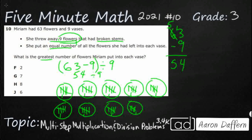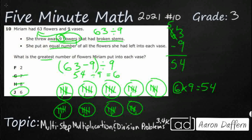So it looks like the answer is going to equal 6. If we know our multiplication facts, 6 times 9 is 54. So our answer is 6, which is answer choice J. Now, where did some of the other answer choices come from? Well, if you didn't take those 9 away and just did 63 divided by 9 — skipping that first step — you would have gotten 7. That's why answer choice J, which is 6, is correct.